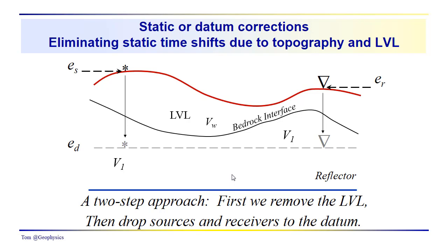With that in mind then, we're dealing with a two-step approach. Remember, we start by removing the LVL. That means we've basically replaced everything in the LVL with a medium that has velocity V1, so we can think of everything from the datum to the surface as having velocity V1. And then we get rid of the topography.